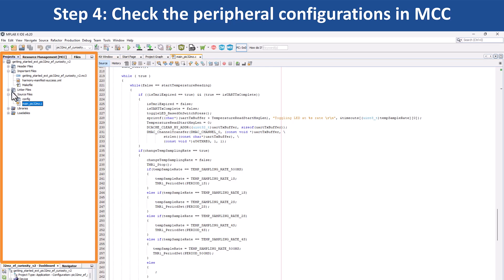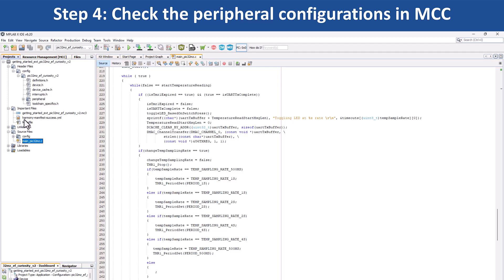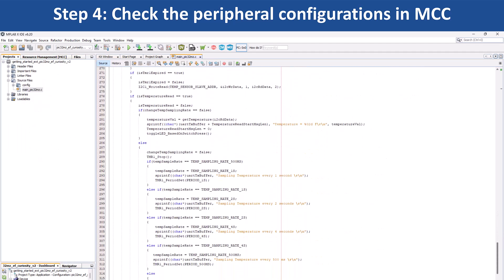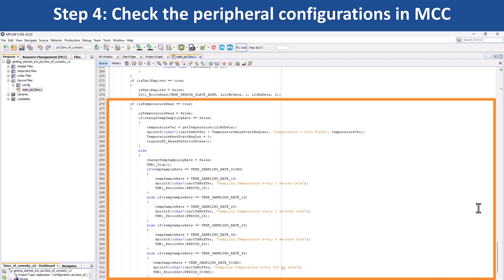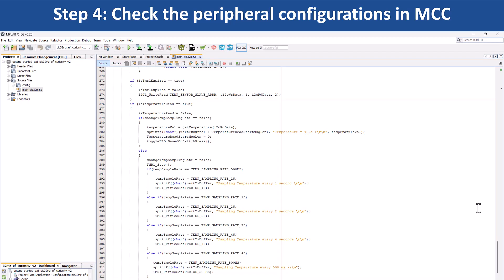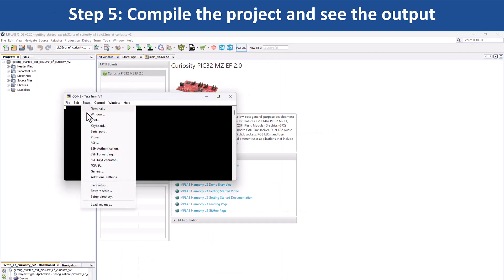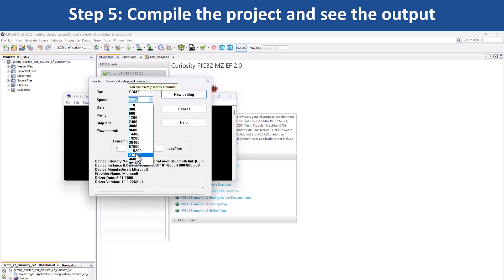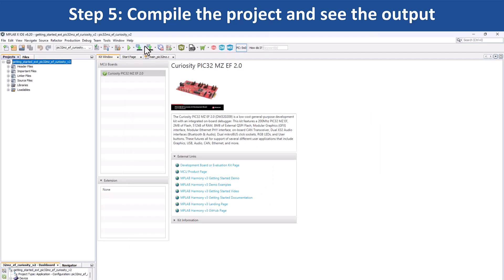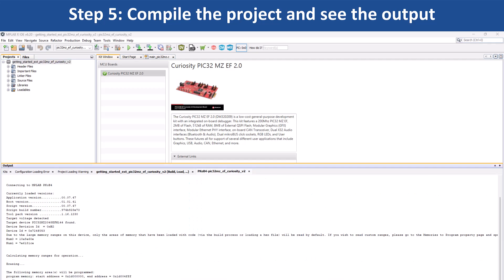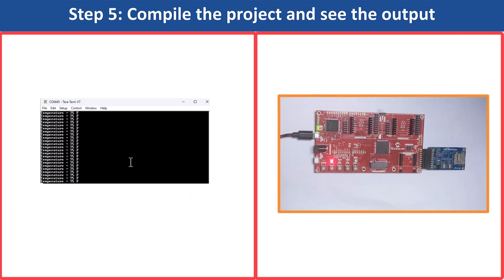You can go to the project configuration path and check the various files to understand how the project is implemented. This demo application reads the current room temperature from the IO1 Xplained Pro Extension Kit. The readings are displayed on the serial console every 500ms, and LED1 toggles with each update. The periodicity of the timeout can be changed by pressing switch SW1. To verify, open a terminal application on your PC such as TeraTerm and set up the serial port. Select the connected hardware tool from the project properties.